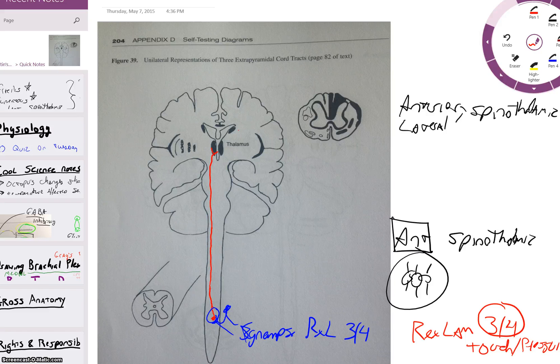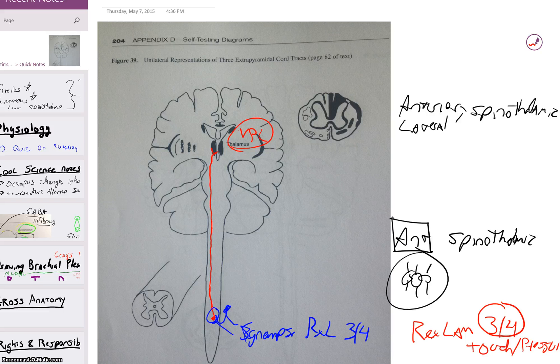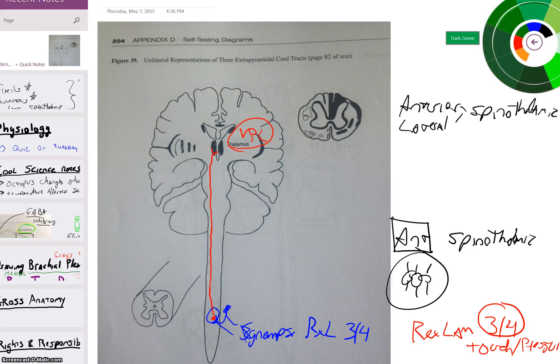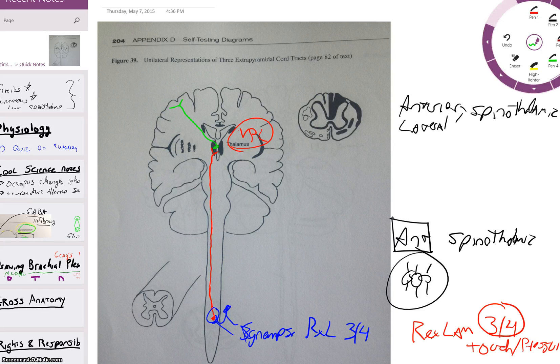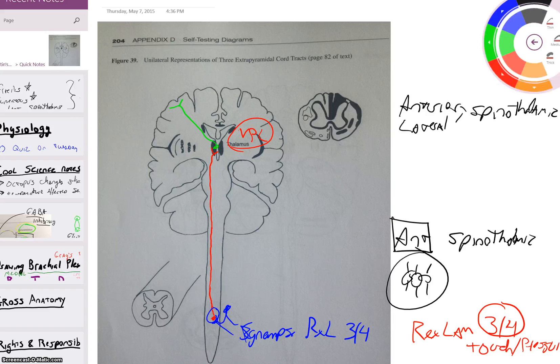Right until it gets to the VPL of the thalamus. Once again, little synapse right there, third neuron in the pathway, goes from the thalamus over to the postcentral gyrus. That's it, real simple. Nobody has much of a hard time with that one, I don't think.